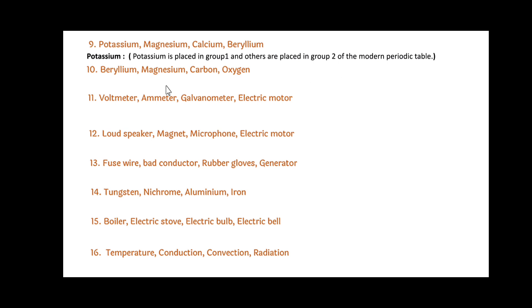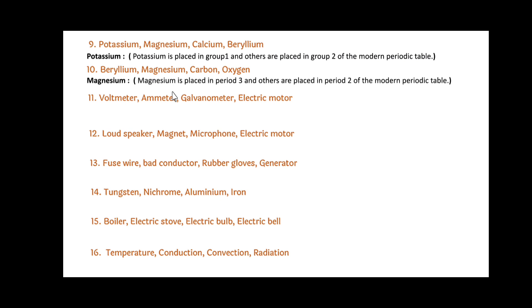Next: Beryllium, Magnesium, Carbon and Oxygen. Among these, Magnesium is the odd one out. Since Magnesium is placed in Period 3, while others are placed in Period 2 of the modern periodic table.